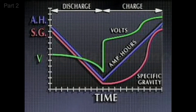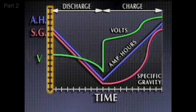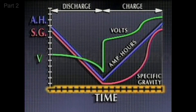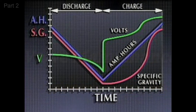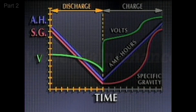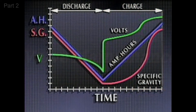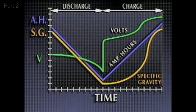The relationship of voltage, capacity, and specific gravity can be shown using a simplified chart. The vertical axis represents values of cell ampere hours, cell specific gravity, and cell voltage. The horizontal axis represents time, divided into discharge time and charge time. Separate lines are used to indicate changing cell ampere hours, cell specific gravity, and cell voltage.